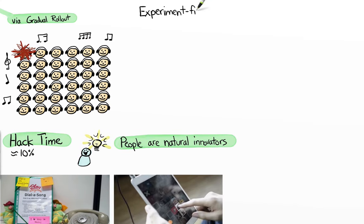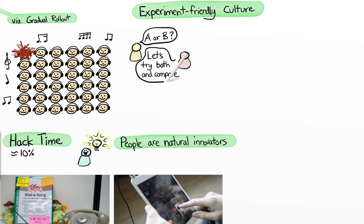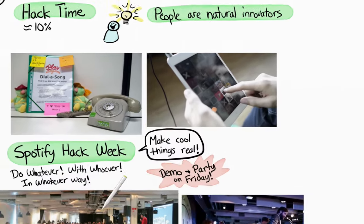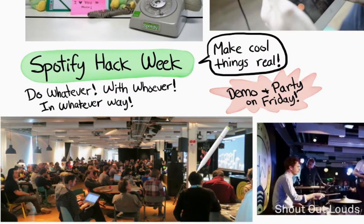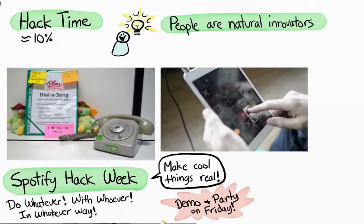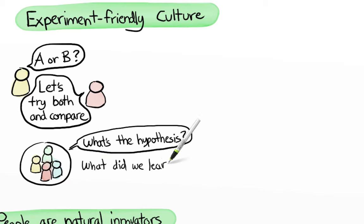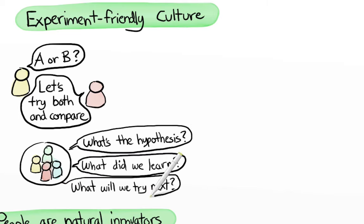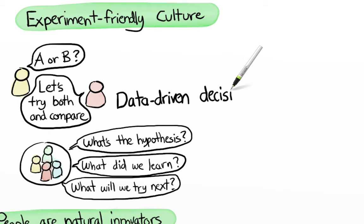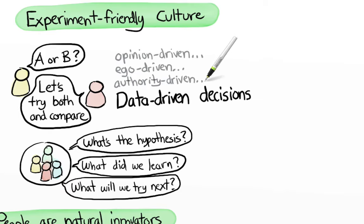As you notice, we have an experiment-friendly culture. Tool A or tool B? Let's try both and compare. Do we really need sprint planning meetings? Don't know. Let's skip a few and see if we miss them. Should this button be in the middle or in the corner? Let's try both. An A-B test. Even the Spotify-wide hack week started as an experiment, and now it's part of our culture. So instead of arguing an issue to death, we talk about things like, what's the hypothesis? What did we learn? And what will we try next? This gives us more data-driven decisions, and less opinion-driven, ego-driven, or authority-driven decisions.